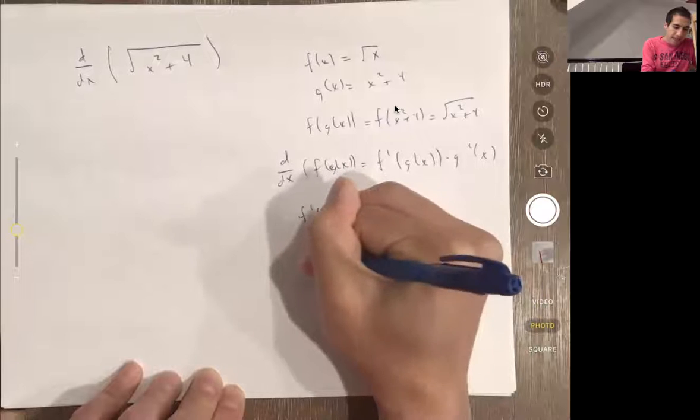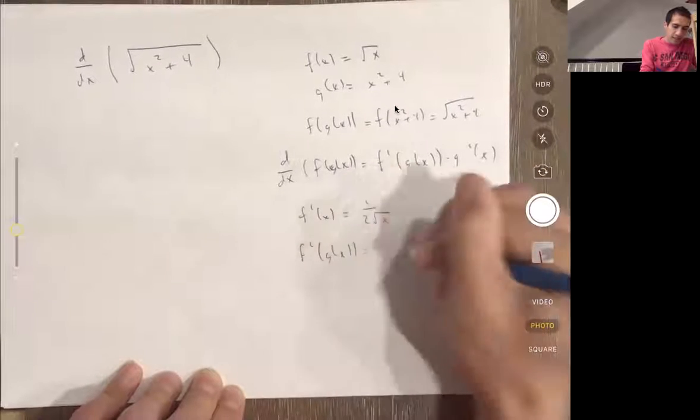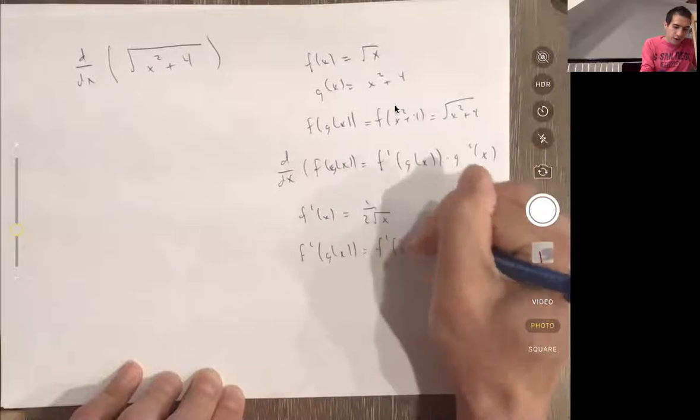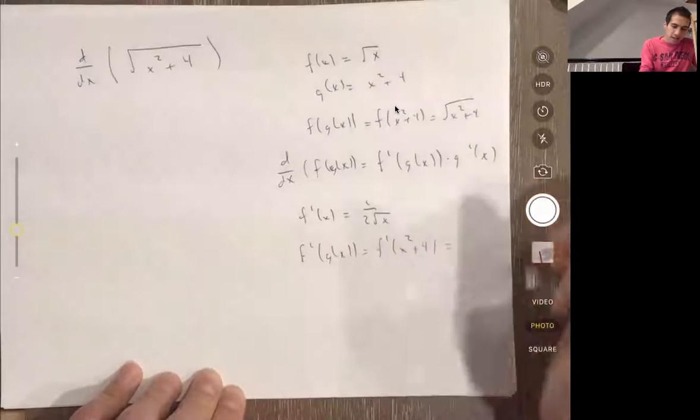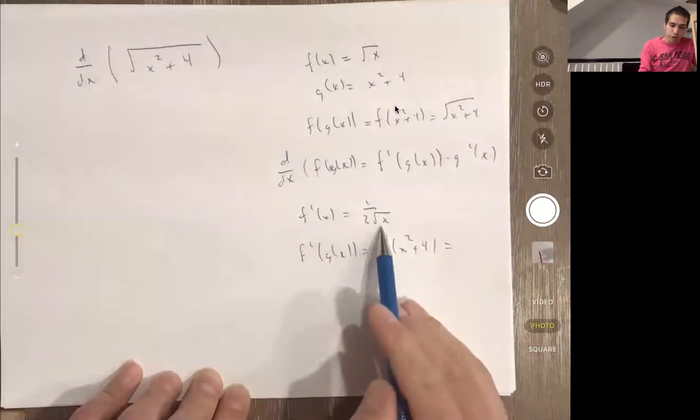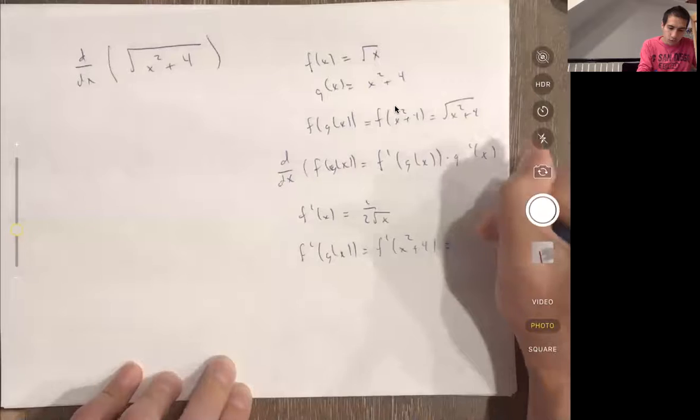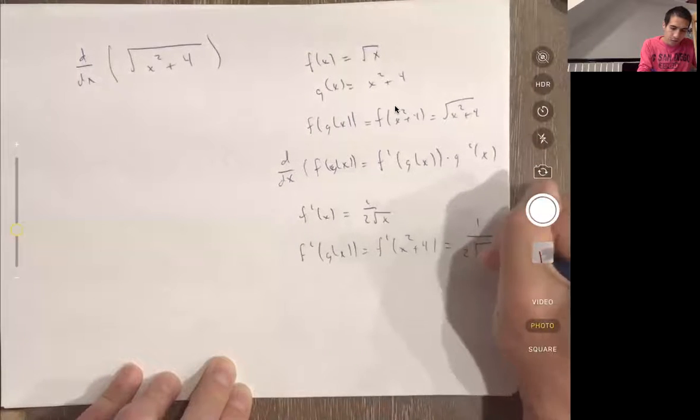And that means that f'(g(x)), which is f' of x² + 4, is 1 over 2 times the square root of what's plugged in. So this is 1 over 2√(x² + 4).